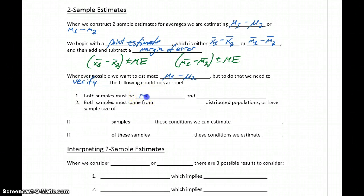Our samples must be random and independent, and that has to apply to both sample sets of data. Both samples must come from normally distributed populations or have a sample size of 25 or larger.